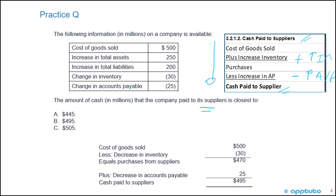As mentioned in that video, you've got to be careful with your signs. They've changed the signs — they've reversed them. It's not plus; the inventory didn't go up, it went down, so we have to change the sign to a negative. And the accounts payable didn't increase, they decreased, so we have to change from less to a plus. That was the key in this question: the signs changed.